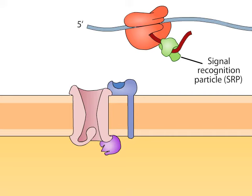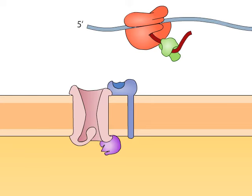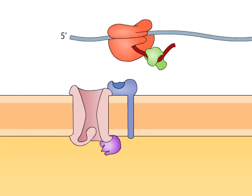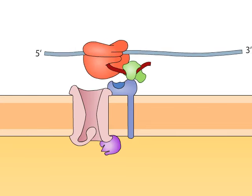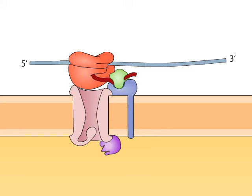The SRP binds the ribosome as well as the signal sequence, and in so doing, stalls translation. The SRP targets the entire complex to the rough endoplasmic reticulum by binding to an SRP receptor on the membrane of the ER.